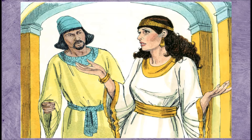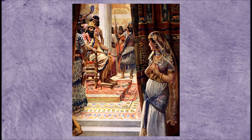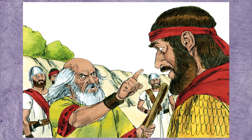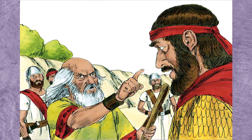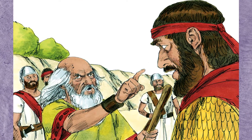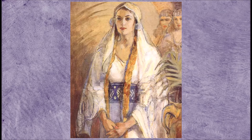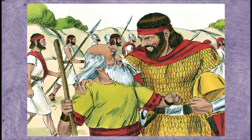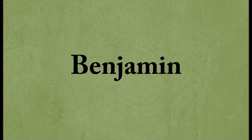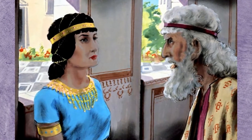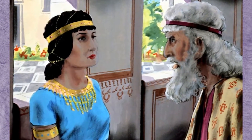Mordecai sends a message to Esther, asking her to plead with the king to change his mind. His words echo Samuel's words to Saul: if you don't do what God has called you to do, God will punish you and replace you with someone willing. Interestingly enough, Esther and Saul were both from the tribe of Benjamin. And Mordecai says, perhaps you were born for such a time as this.